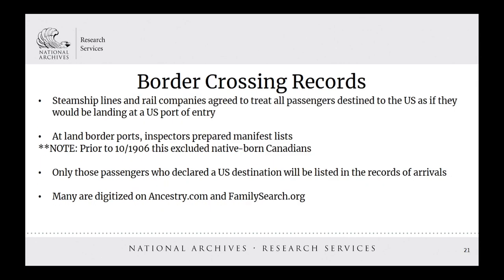Some immigrants entered the U.S. through land-based ports of entry. Border crossing records from along the Mexican and Canadian borders can be a wonderful genealogical resource, and many have been digitized through Ancestry.com and FamilySearch.org. Steamship lines and rail companies agreed to treat all passengers destined to the U.S. as if they would be landing at a U.S. port of entry. The Immigration Act of 1891 required that information about immigrants entering the U.S. over land be recorded. At land border ports, inspectors prepared manifest lists. Note that prior to October 1906, this excluded native-born Canadians crossing the northern border, and only those passengers declaring a U.S. destination will be listed on the records of arrivals.